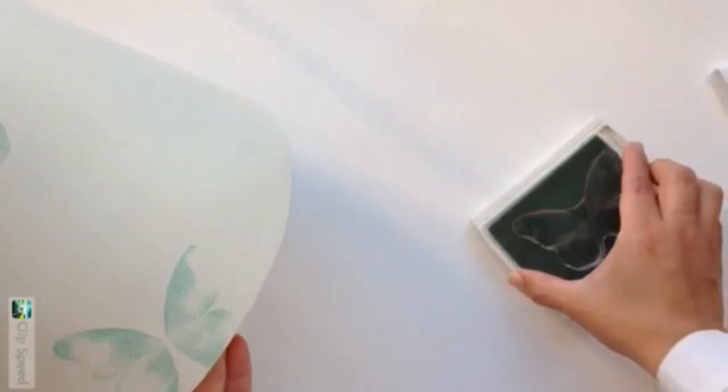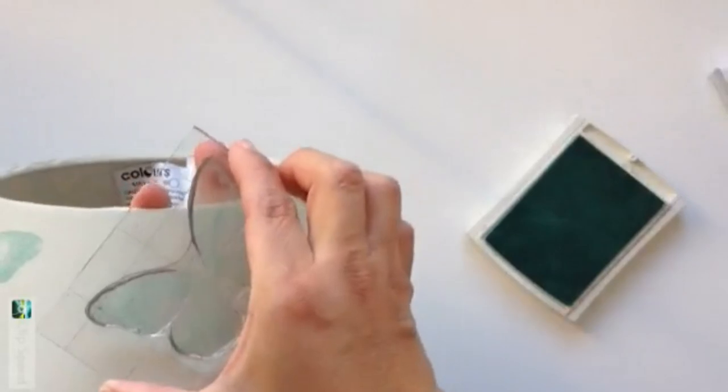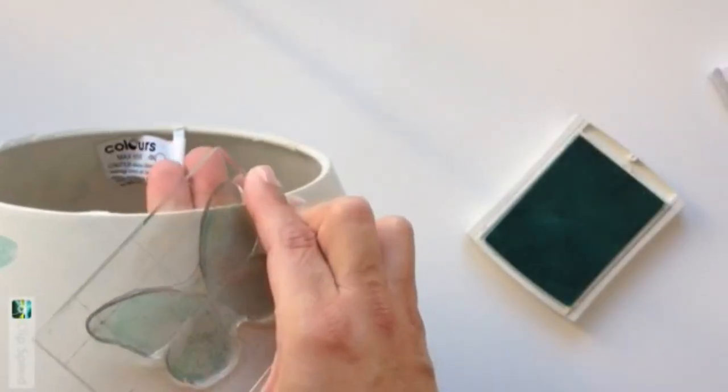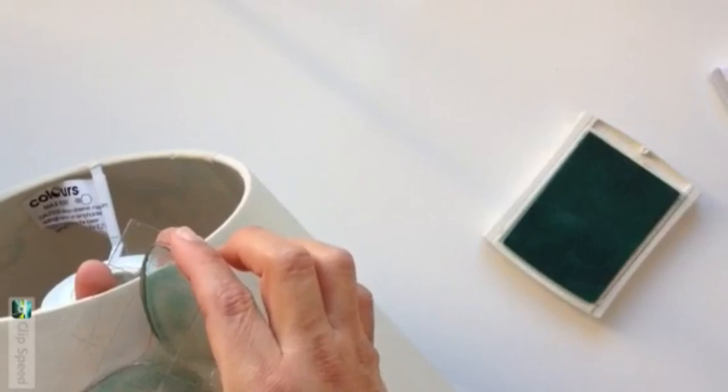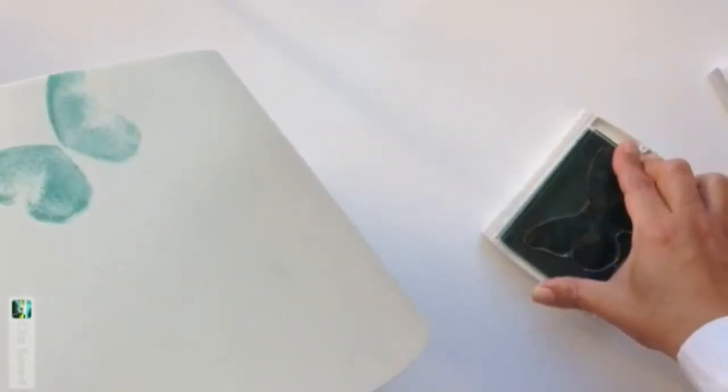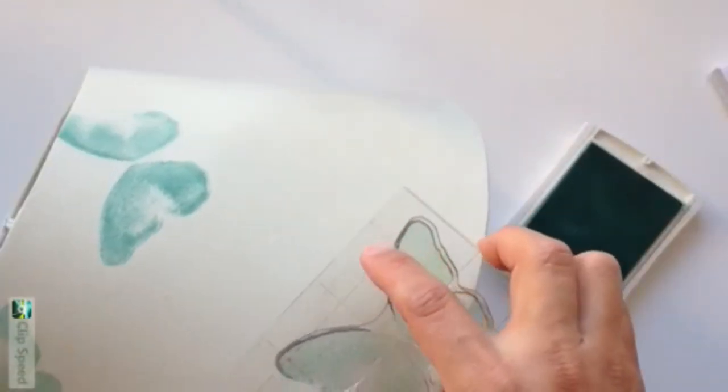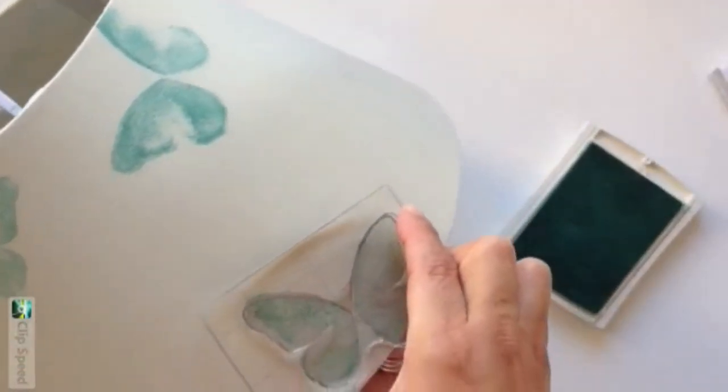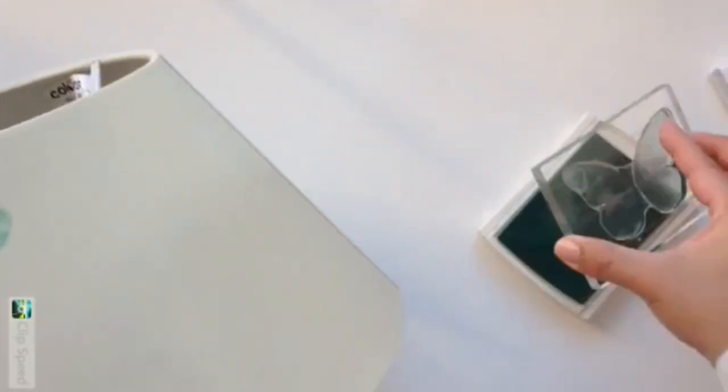You'll understand what I mean better when you see the next step in my stamping. For now, I'm just stamping with Pool Party the butterfly, which is the background of the butterfly. It's kind of a solid image, and this is how it can look once it's finished.